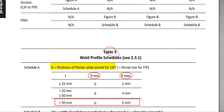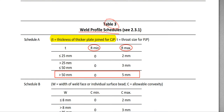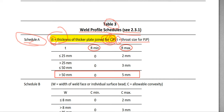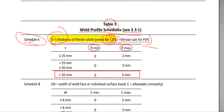Table 3 is Weld Profile Schedules, again C2.3.1. Schedule A is the Groove Weld. The lowercase t means thickness of the thicker plate joint for CJP — Complete Joint Penetration. The lowercase t can also mean throat size for PJP — Partial Joint Penetration. CJP is full penetration, and PJP is partial joint penetration, not full penetration.